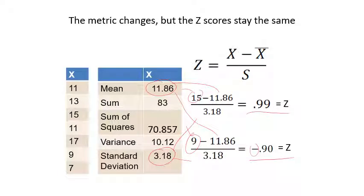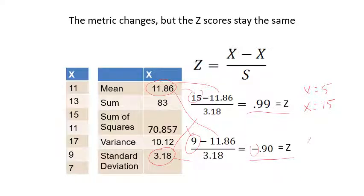With two different data sets, you can have the same z-scores for different raw scores, and this is what allows us to compare. A z-score of 0.99 was a raw score of 5 in the first data set, but a raw score of 15 in the second data set. So the equivalent score to a 5 in one data set is a 15 in the other because they have the same z-score. That's the main reason we use z-scores.